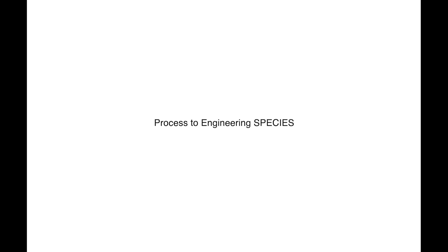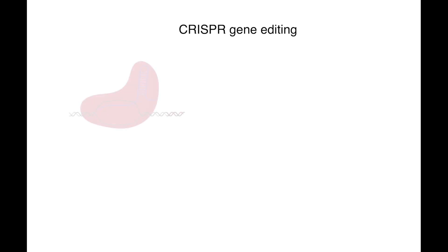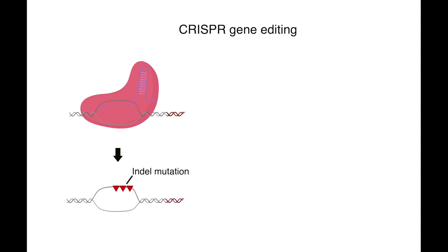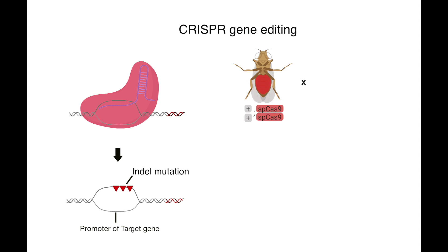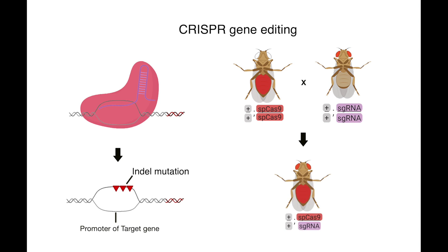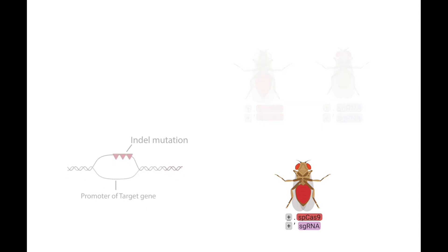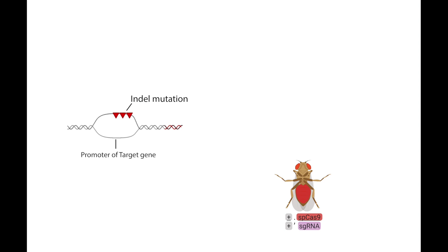So how exactly do we engineer species? First, we utilize the CRISPR gene editing tool to create an indel mutation in the promoter region of the target gene. To do this, we let a fly that expresses Cas9 mate with a fly that expresses single guide RNA. Their progeny will carry both Cas9 and single guide RNA, which can act together to create a double-stranded DNA break at the promoter region of the endogenous gene. Since the single guide RNA targeting site now has mutations, the single guide RNA can no longer bind to it, and therefore it is protected.